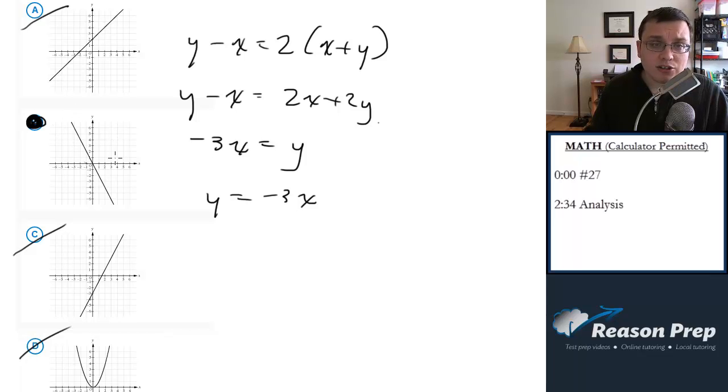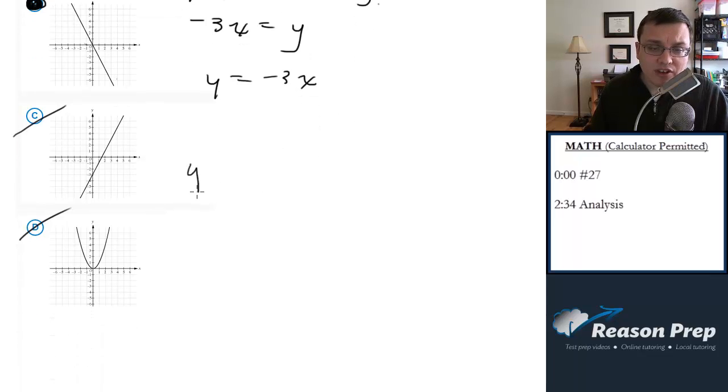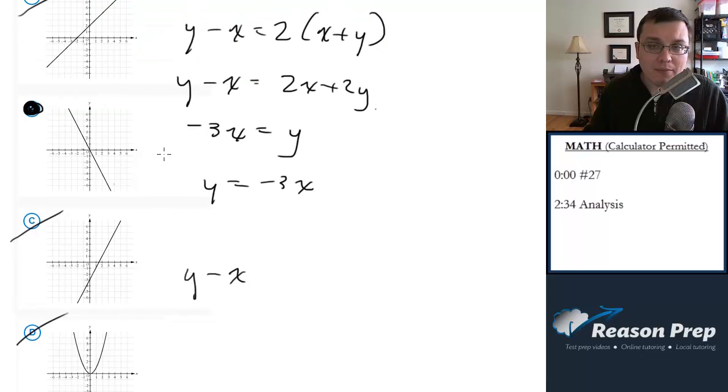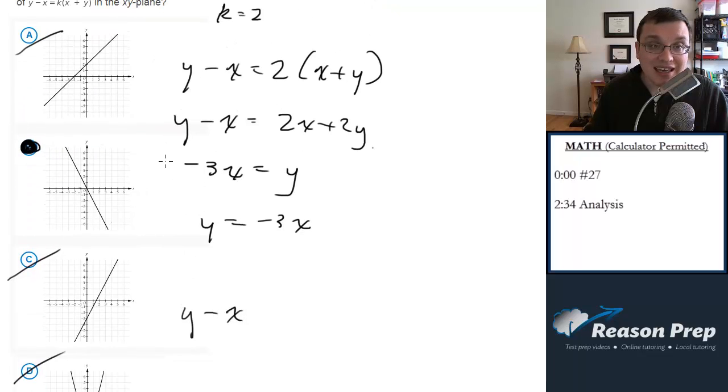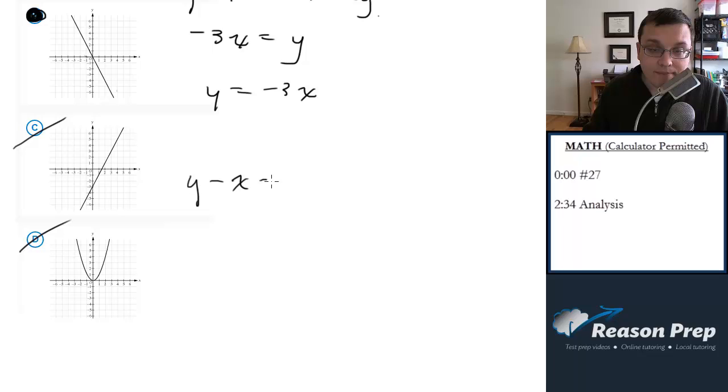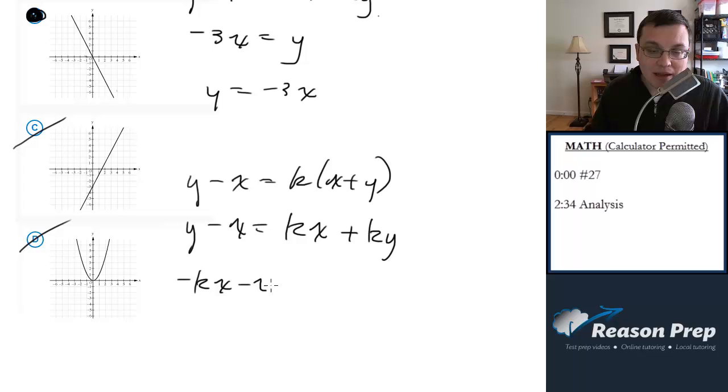The other way to do it is to do it algebraically, which is a bit harder, but you get the same conclusion. So we have y minus x equals k times x plus y. What I want to do now is distribute this k, just like we distributed the two before. So we get kx plus ky. Bring the y over, bring the x over, just as we did. We get minus kx minus x equals ky minus y.